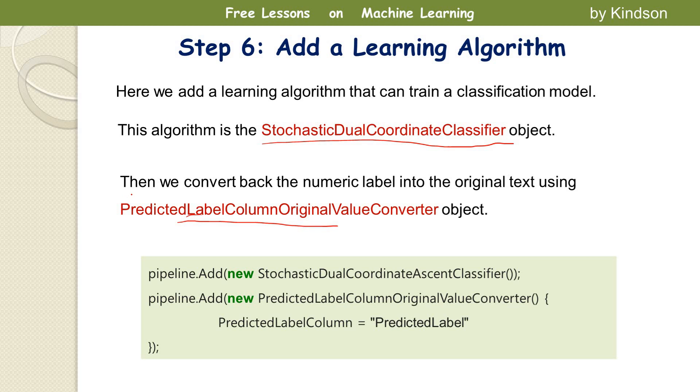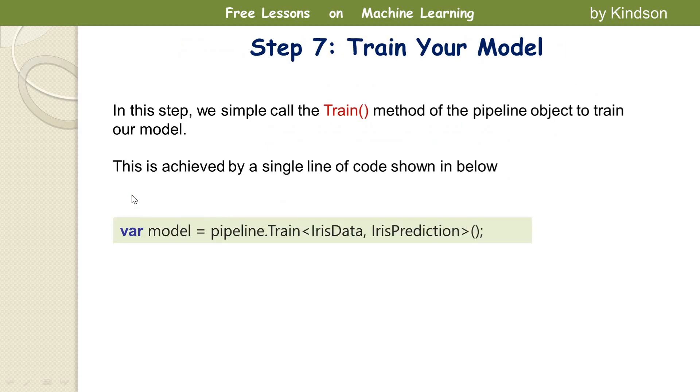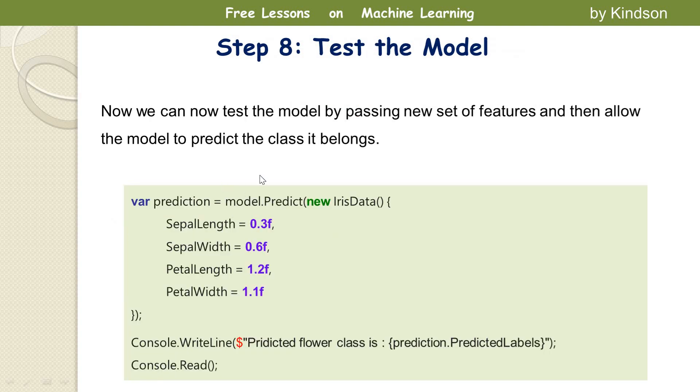So after this you train your model. After creating the model you simply call the train method of the pipeline. So you see pipeline dot train and it takes a few seconds depending on the volume of the data to actually train the model.